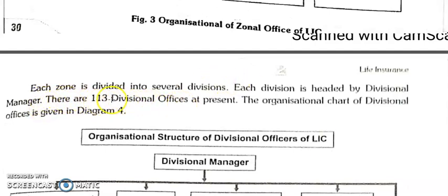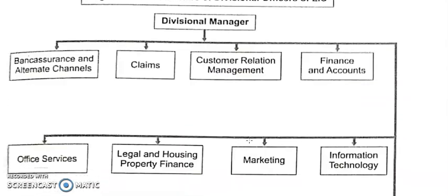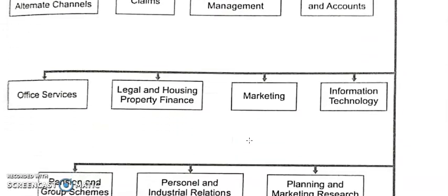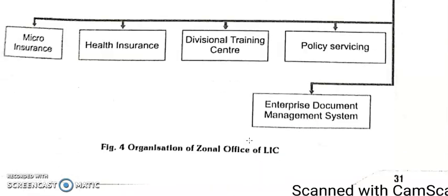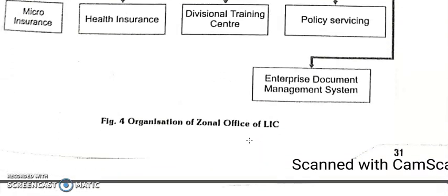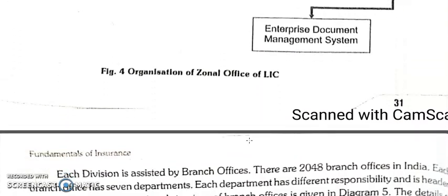As per the data given in the book, there are 113 divisional offices at present. The chart of divisional offices is similar in structure. The PDF has been shared, and you can go through the terms listed there.